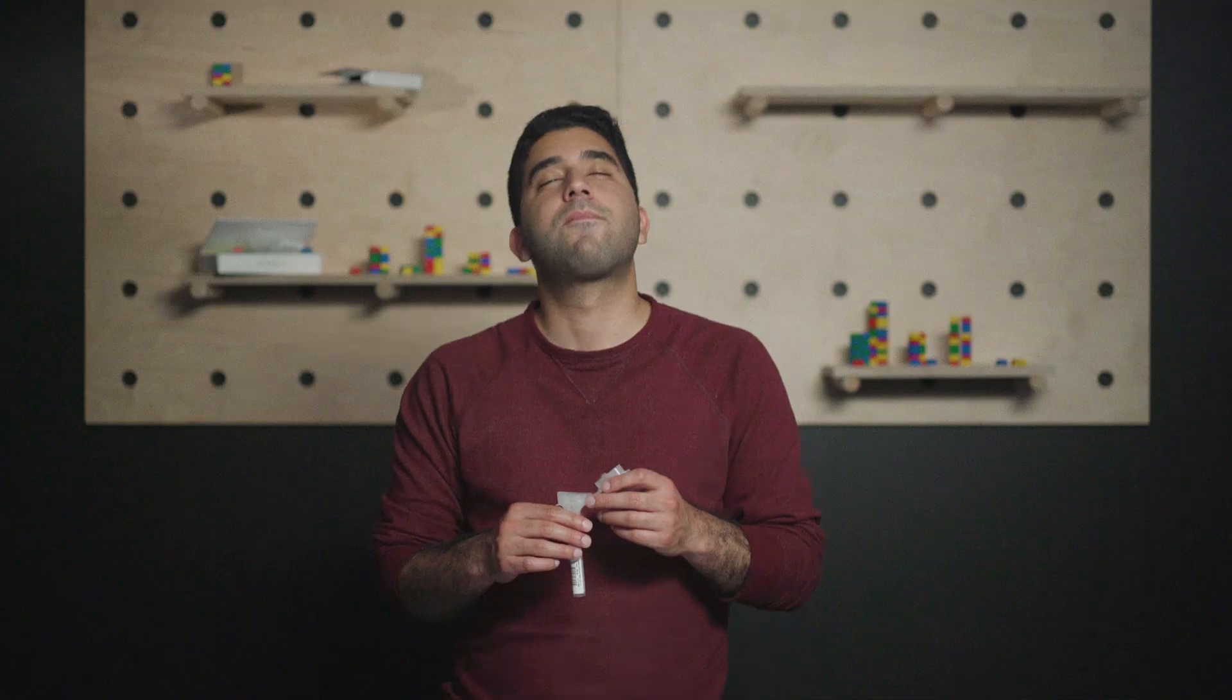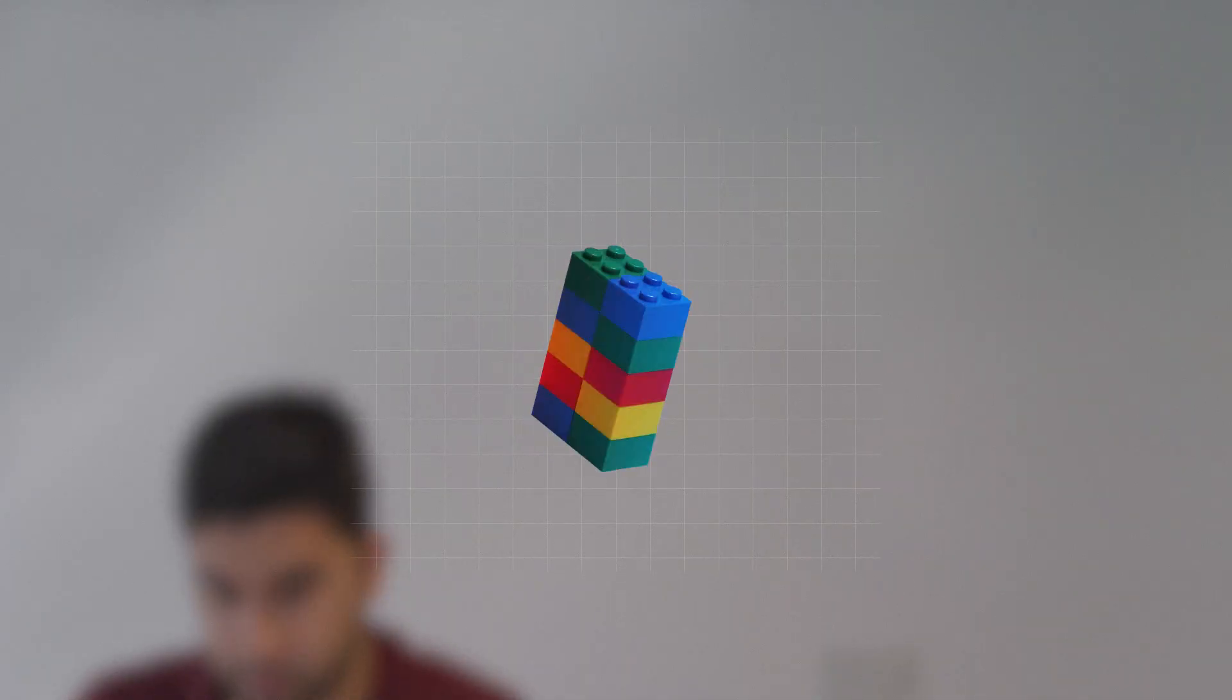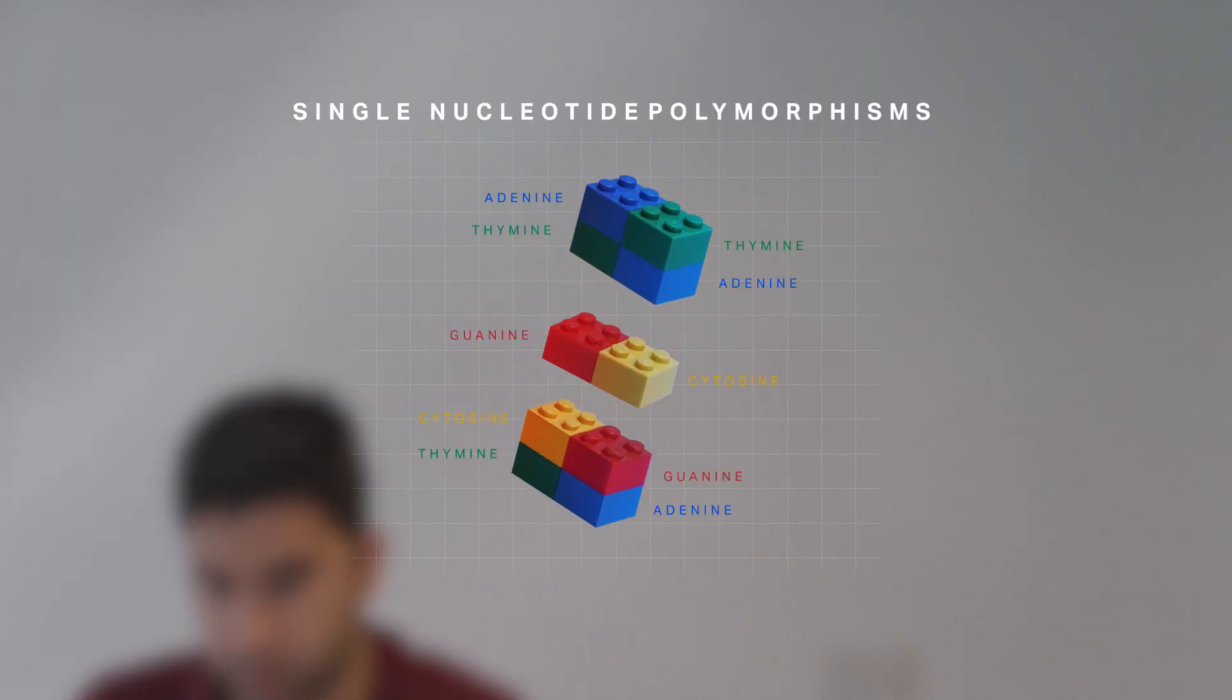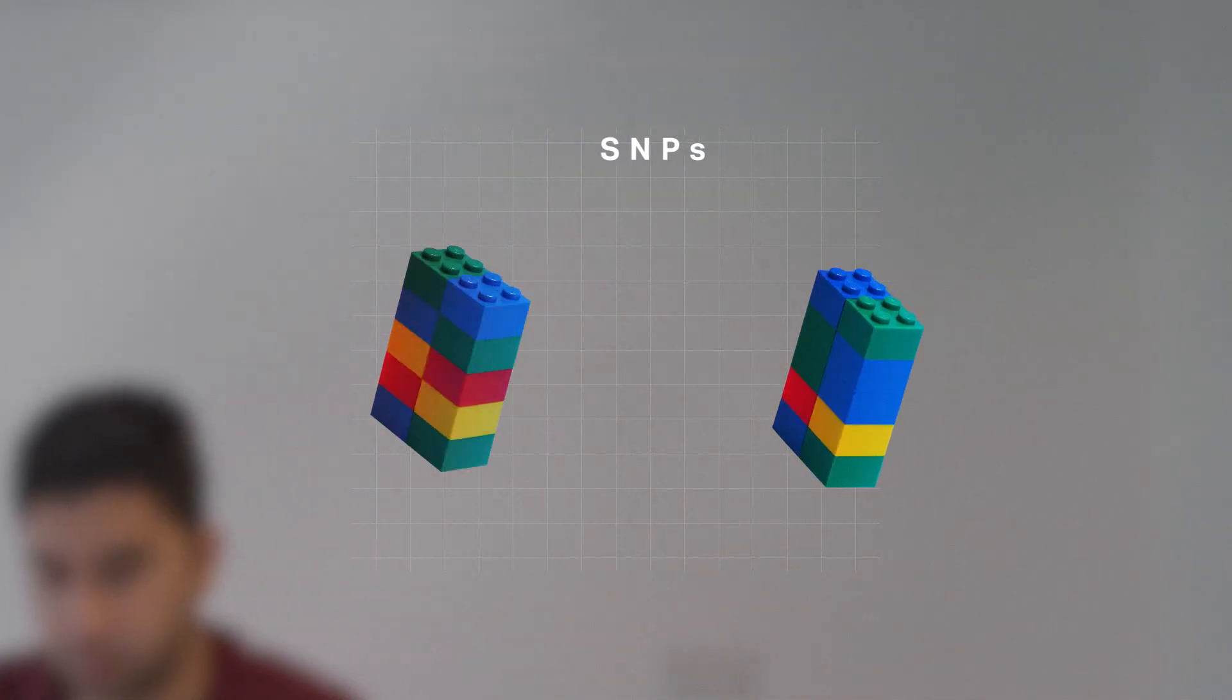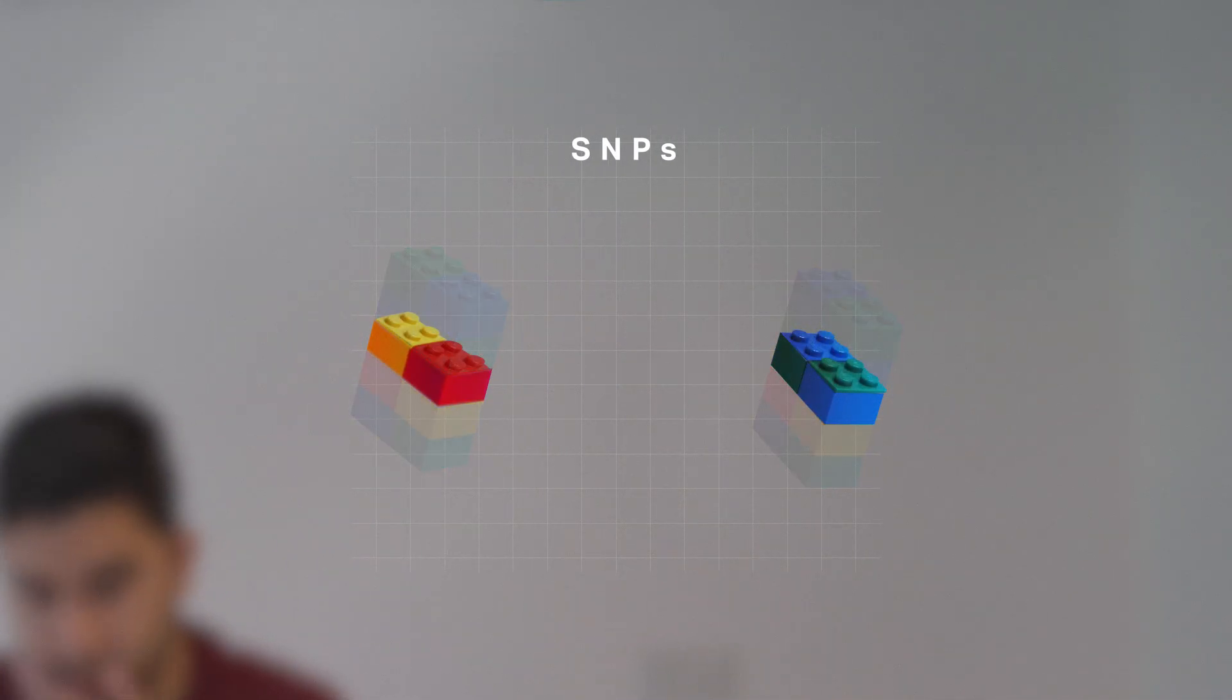An at-home DNA test like 23andMe generally works by looking at spots in your genome called single nucleotide polymorphisms, or SNPs. Each one is a specific location where there are known variations from person to person. Companies make their guesses about your ancestry by analyzing thousands or even millions of SNPs.